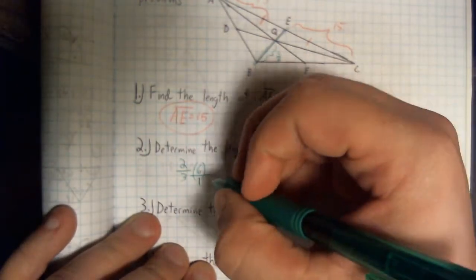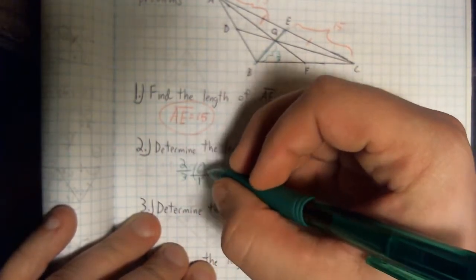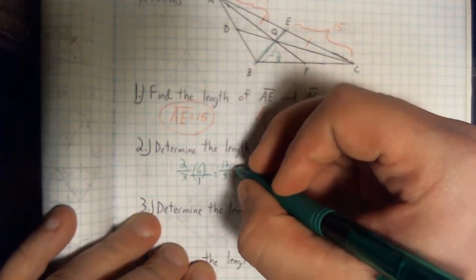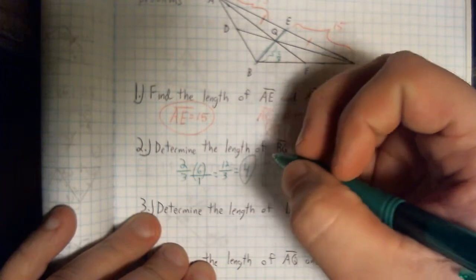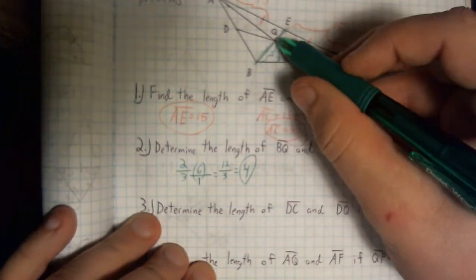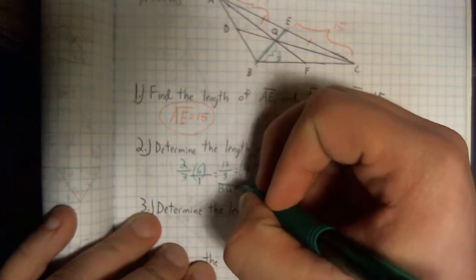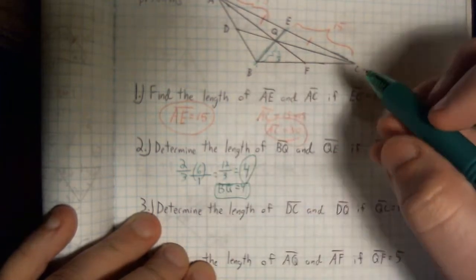So, if I multiply, that's 2 times 6, which is 12, divided by 3 times 1, which is 3, which is going to give me 4. So, from B to Q, which is two-thirds of the distance, is going to be 4.